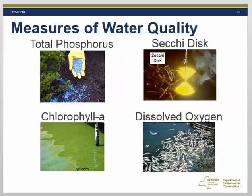There are many years of monitoring data for the lake. Some of the common measures of water quality collected are shown here. Total phosphorus is commonly measured, particularly at the lake's surface. The Secchi disk, shown in the picture in the upper right, is a black and white disk used to measure water clarity. Chlorophyll A gives us a measure of how green the water is. And finally, we have dissolved oxygen measurements through the water column, which are used to identify if and when low dissolved oxygen occurs in the lake.